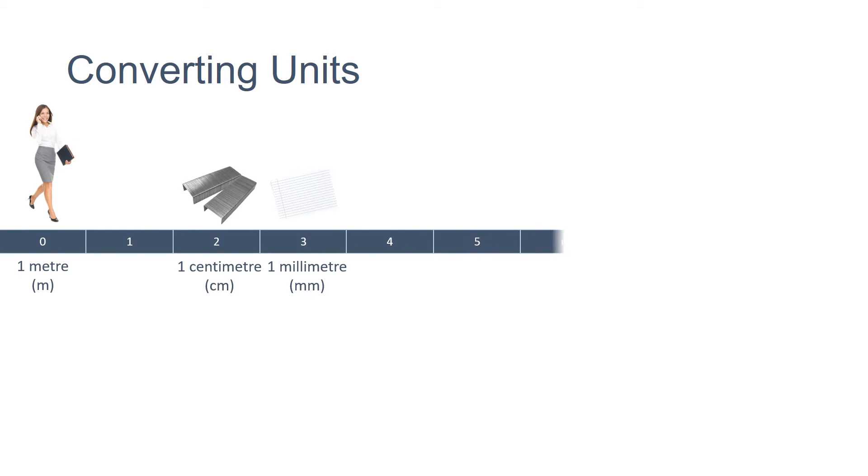As we move smaller, we get to micrometres. These are six orders of magnitude smaller than a metre, and this is the kind of useful distance when we're measuring things at a cellular level. Even smaller still, we get to nine orders of magnitude smaller than a metre, and this measurement is called a nanometre.